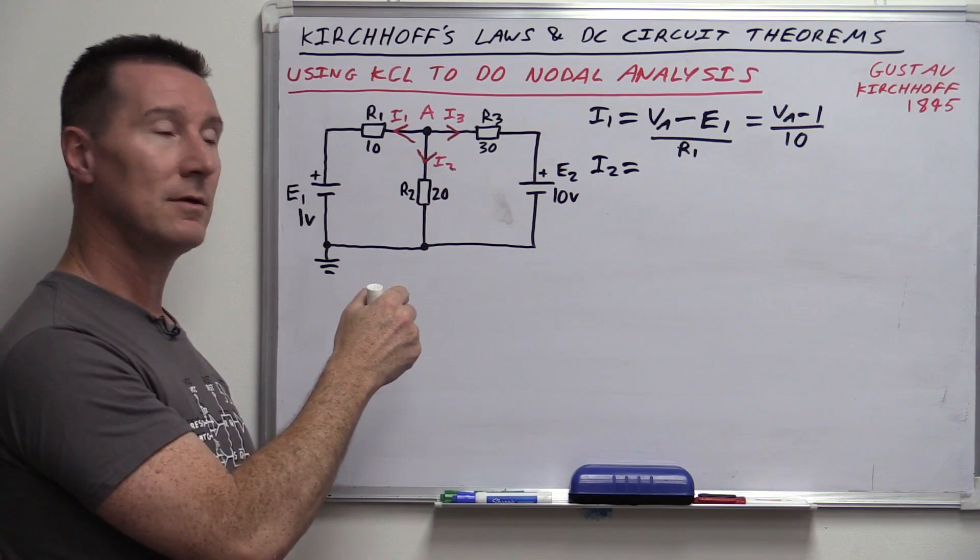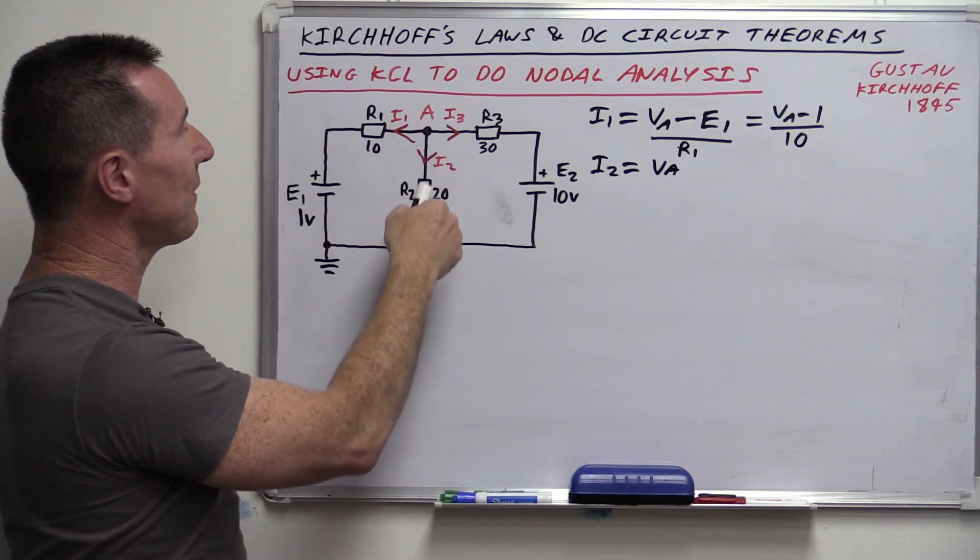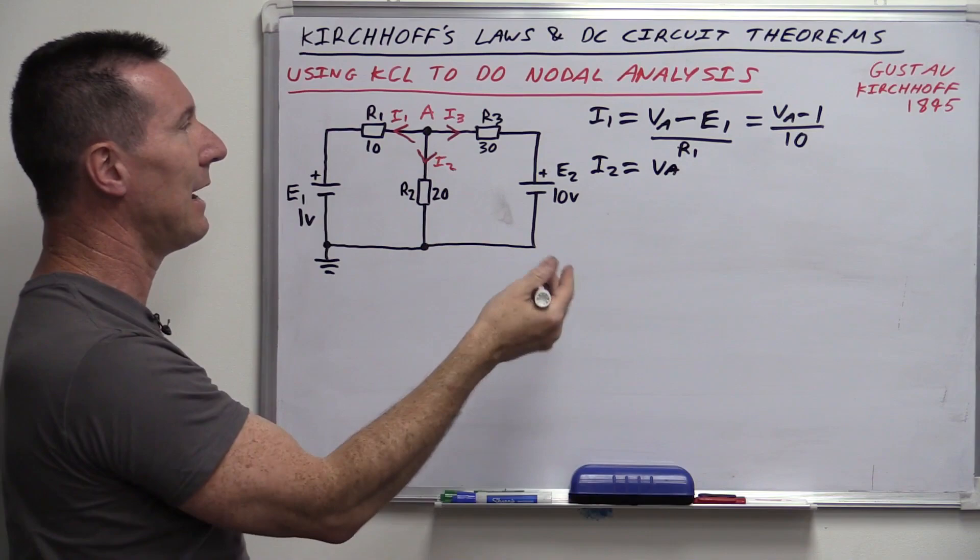Now we apply Kirchhoff's current law: the algebraic sum of the currents at a junction equals zero. I1 + I2 + I3 = 0. That is our nodal equation. We know the equations for I1, I2, and I3, so we just plug them in: (VA − 1)/10 + VA/20 + (VA − 10)/30 = 0. All we have to do now is solve this nodal equation and the voltage at node A will pop out — that's the whole idea of nodal analysis.